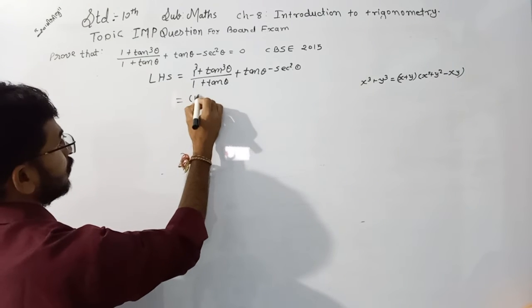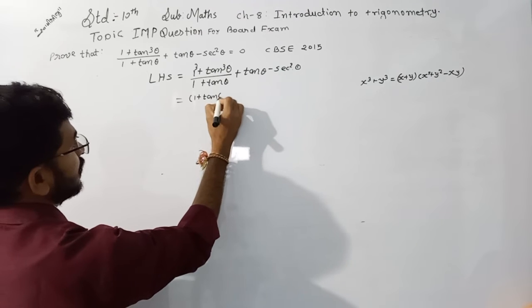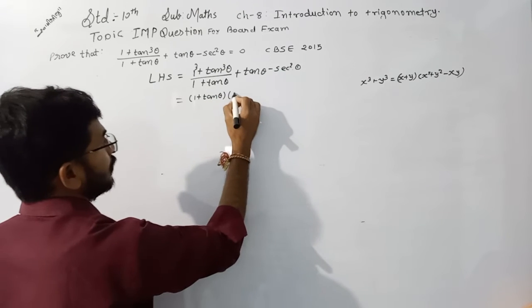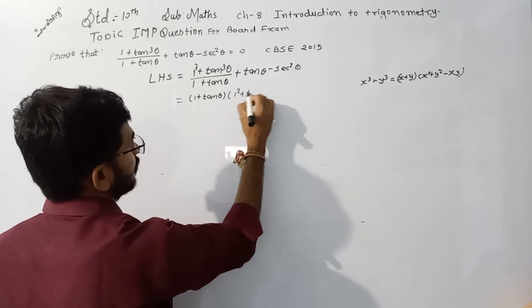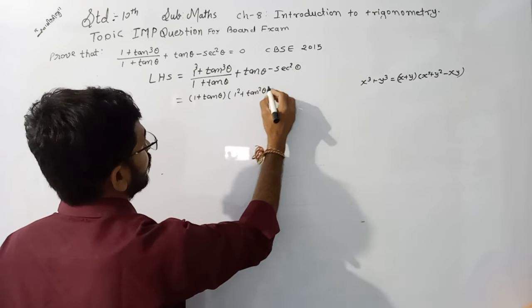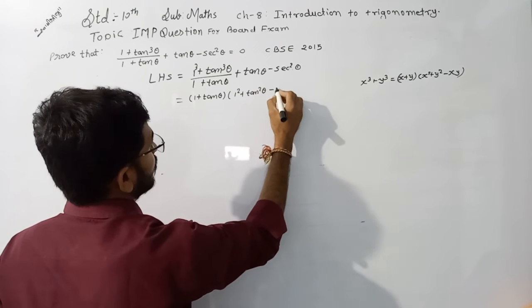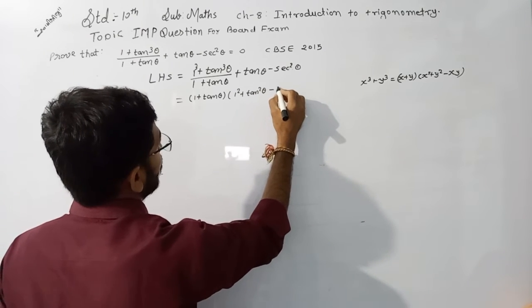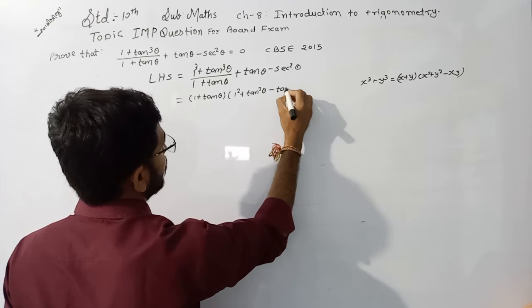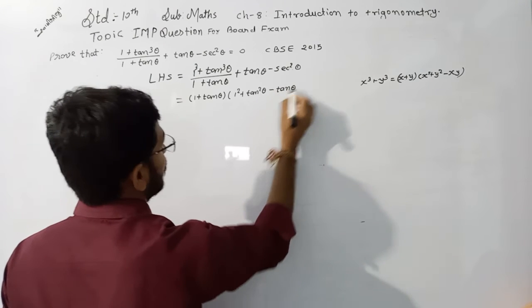So 1 plus tan cube theta is equal to (1 plus tan theta) into (1 square plus tan square theta minus 1 times tan theta). We write this as just tan theta.